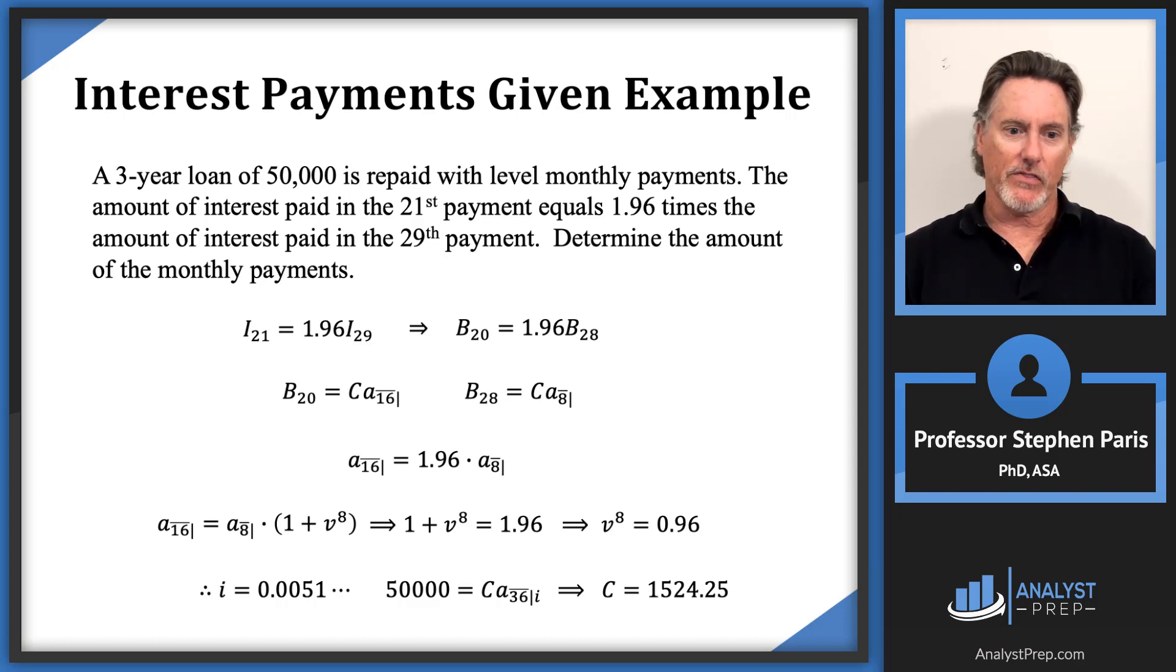If they would have said 1.96 times the amount of interest in the 30th payment, that would have been I sub 30. So the next line there, the corresponding equation with balances, I would have had B sub 29. And with B sub 29, let me think about that. After the 29th payment I'd have seven more payments. I'd have C times a angle 7 is what B sub 29 would be.